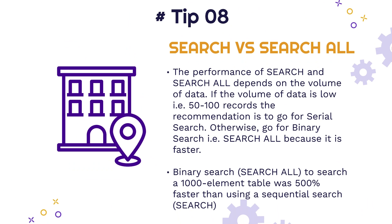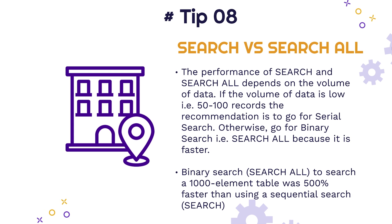Tip number eight: SEARCH versus SEARCH ALL. The performance of SEARCH and SEARCH ALL depends primarily on the volume of data. If you are expecting a low volume of data — around 50 to 100 records — you should go for a serial SEARCH. If you are expecting a high volume of data such as 1,000, 2,000, or 5,000 records, always go for SEARCH ALL, which is a binary search. Binary search on a 1,000-element table is 500 times faster than a sequential search. Based on the number of records expected, take a call whether to use serial or binary search.